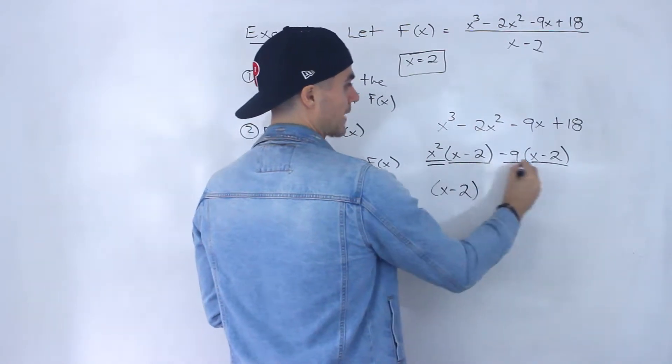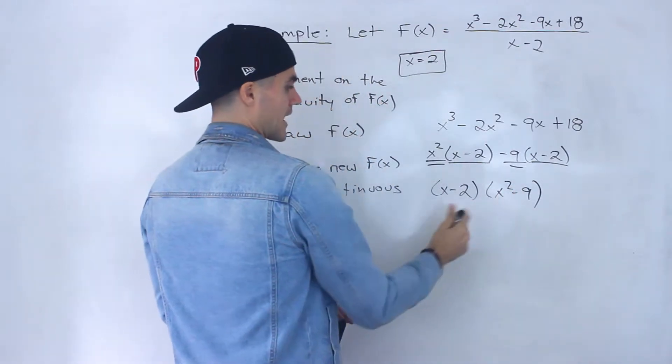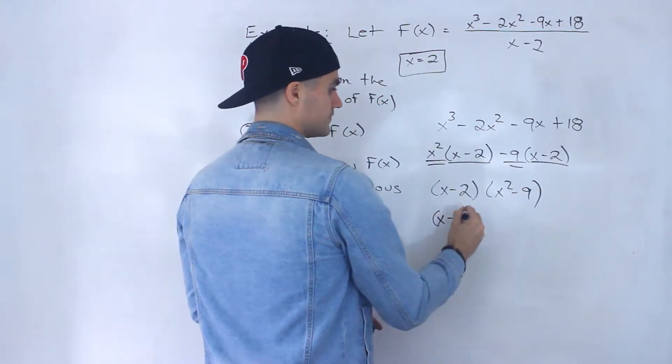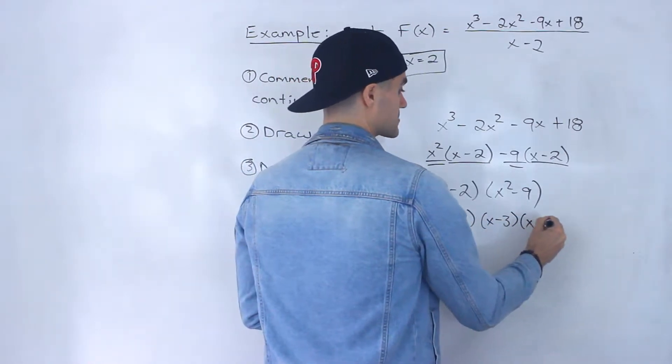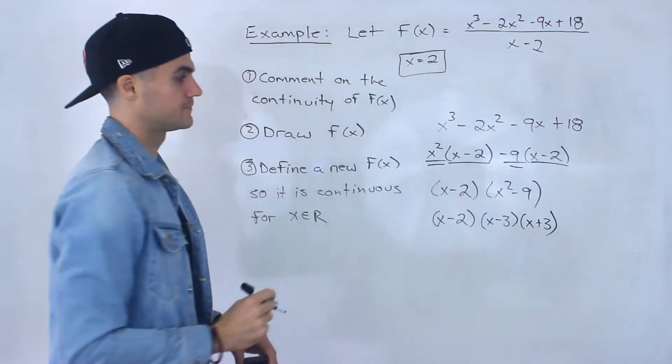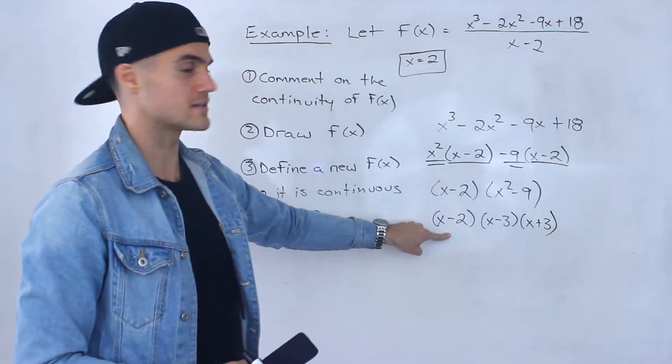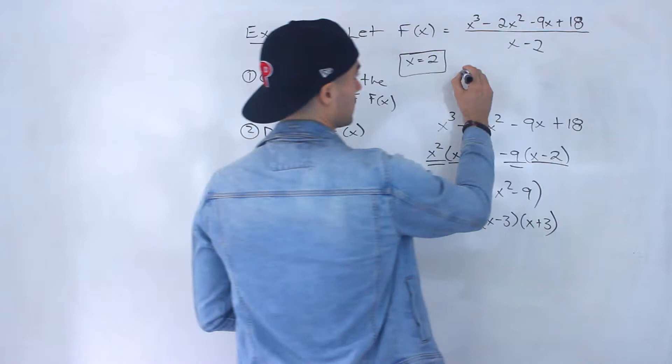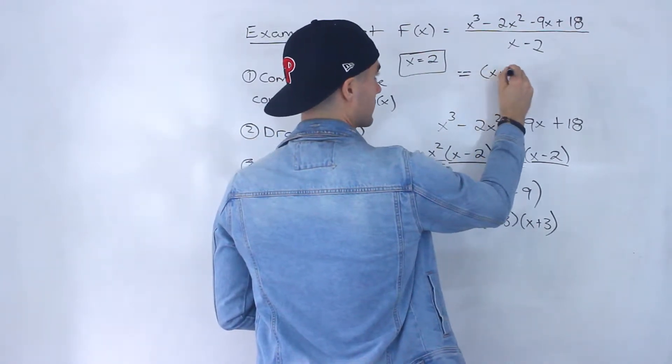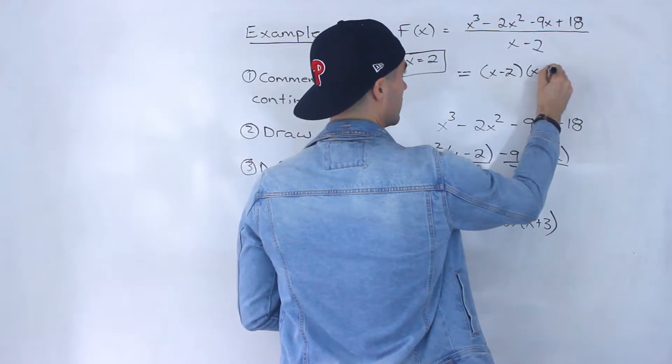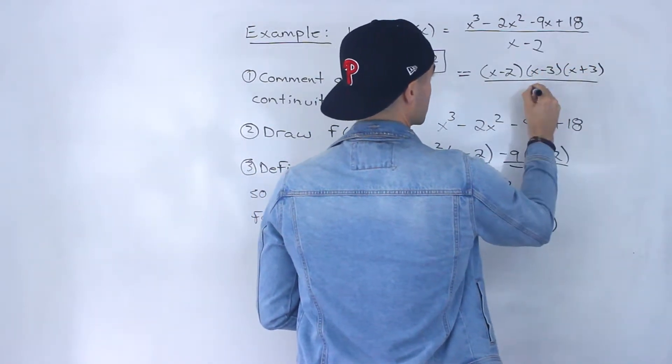And so we'd be left with x squared minus 9. And then notice that x squared minus 9, it factors into x minus 3, x plus 3, like that. So this numerator here, it factors into this here. So if we take this function and we rewrite it, so in the numerator, I'm going to put this factored form